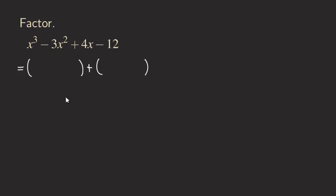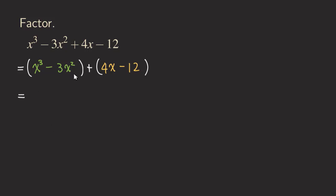We are going to put the first two terms in the first group and then the last two terms into the second group. So the first two terms we have X cubed minus three X squared, and then the last two terms we are going to have four X minus 12. We are going to factor the greatest common factor, the GCF, from both groups. So we pull out the GCF, which will be X squared, because we can pull X squared from the X cubed and from the three X squared.